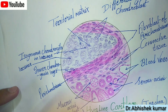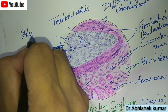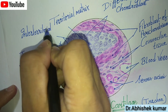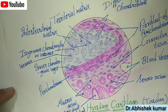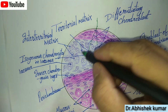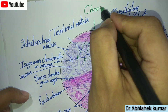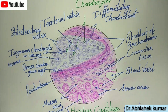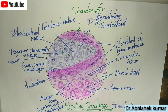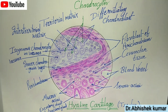This one is the territorial matrix, and here is the interterritorial matrix. All of this together is called the chondrocytes. This is complete.